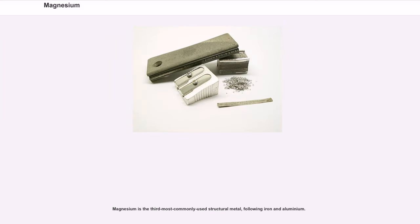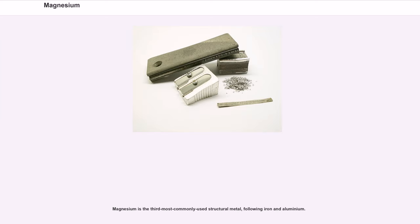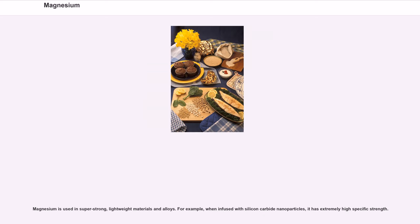Magnesium is the third most commonly used structural metal, following iron and aluminium. The main applications of magnesium are, in order: aluminium alloys, die casting, alloyed with zinc, removing sulfur in the production of iron and steel, and the production of titanium in the Kroll process. Magnesium is used in super strong, lightweight materials and alloys. For example, when infused with silicon carbide nanoparticles, it has extremely high specific strength.